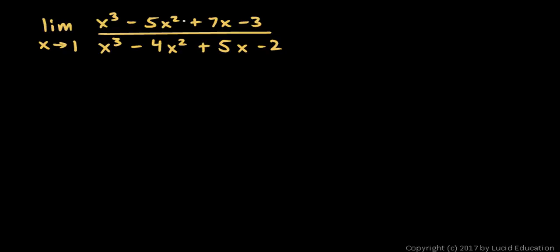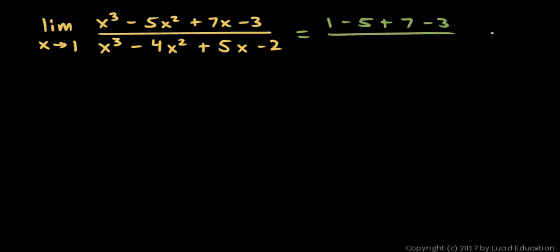The limit as x approaches 1 of one polynomial over another. The first thing to try is substituting a value of 1 in for the variable. When we do that, we get 1 cubed, which is 1, and this will be 1 minus 5 plus 7 minus 3, over 1 minus 4 plus 5 minus 2. The numerator is 1 minus 5 is negative 4, plus 7 is 3, minus 3 is 0, and the denominator also evaluates to 0. So we have 0 over 0, an indeterminate form.